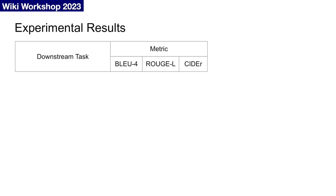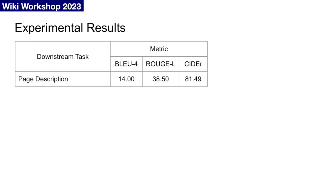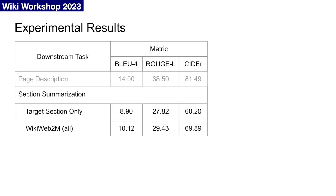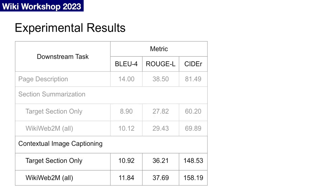Here we show some of our experimental results for each task. We include BLEU-4, RougeL, and CIDER metrics. For section summarization and image captioning, we compare performance when only inputting the target section versus all sections from the webpage. For section summarization, we try only inputting the target section to be summarized, or for image captioning, we try only inputting content from the section the image originated. In both cases, it is clear that using all data available per page in WikiWeb2M improves performance. For page description, it inherently requires the entire page, and also is only made possible with our new dataset.